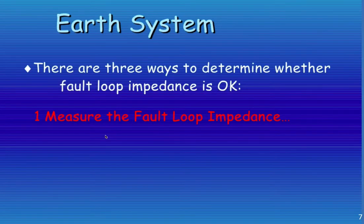Lesson 12a, part 1, earthing systems. As we mentioned before, there are three ways to determine whether fault loop impedance is okay or appropriate. The first is to measure the fault loop impedance. So how do we go about doing that?